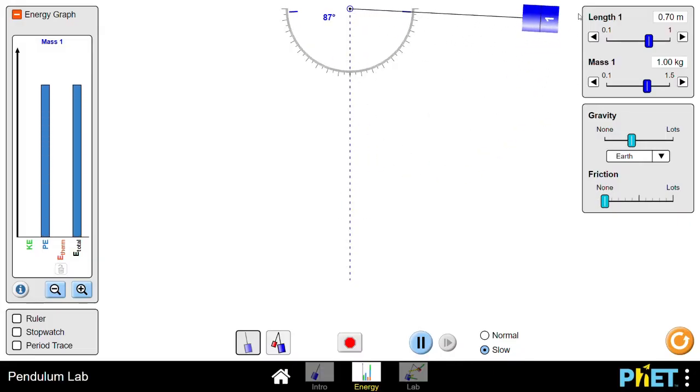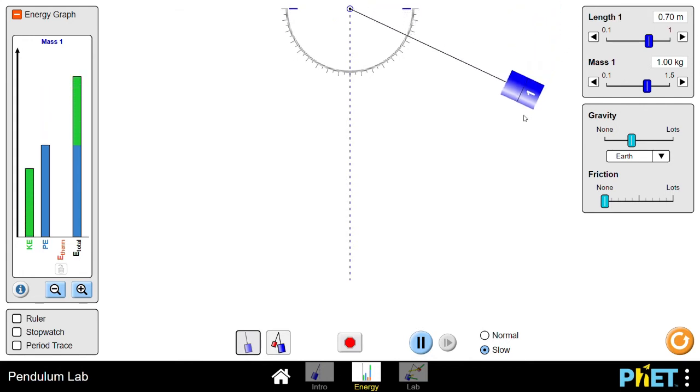We can see that in simulation. If we set 90 degrees of pendulum, it will swing to the same height on the other side.